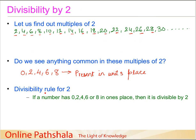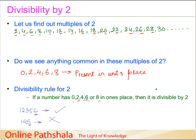This leads us straight to the divisibility rule for 2: if a number has 0, 2, 4, 6, or 8 in its ones place, then it is divisible by 2. For example, 12356 has 6 in the units place, so yes, it is divisible by 2. What about 145? The units place has 5, which is not in our criteria, so it is not divisible by 2. In this lecture, we discussed the divisibility test for the numbers 10, 5, and 2. We will continue with the more complicated divisibility tests for the remaining numbers in the next session.